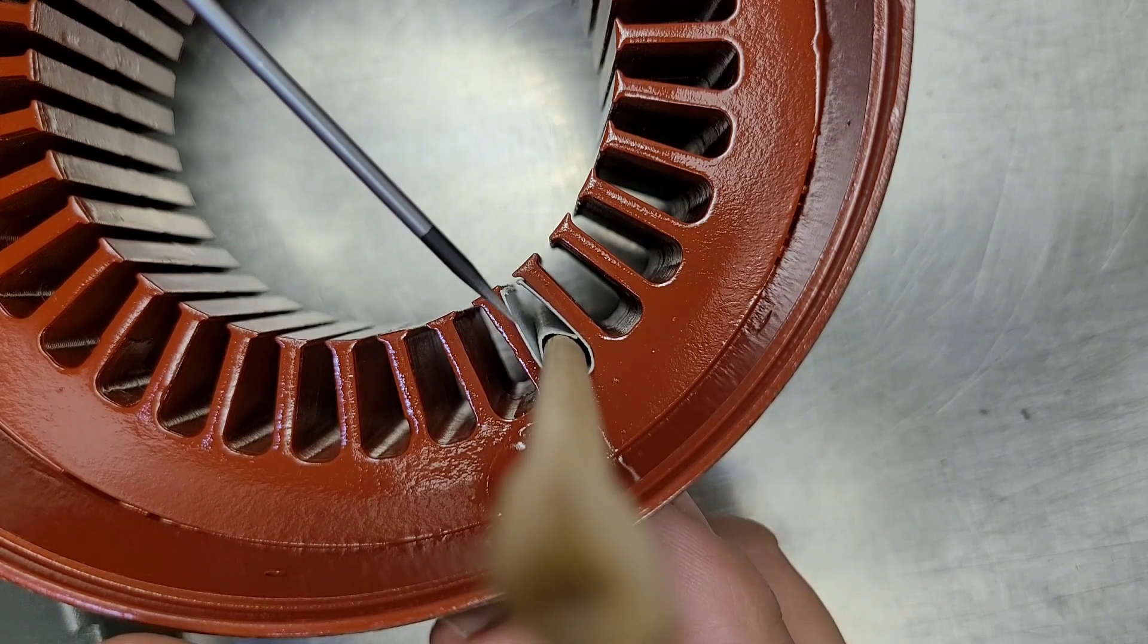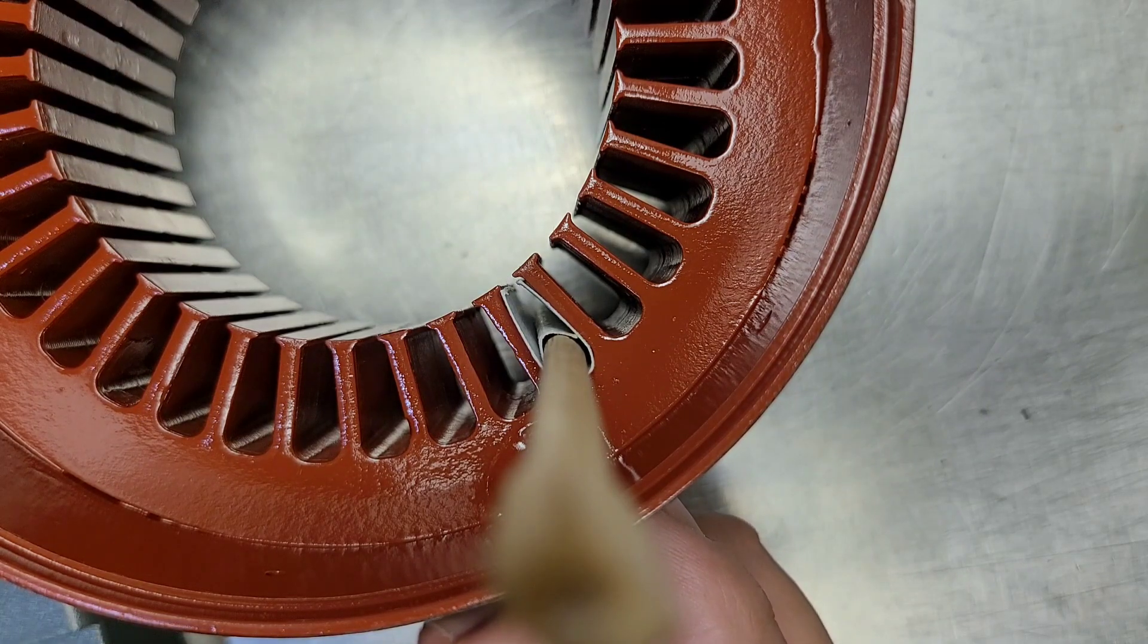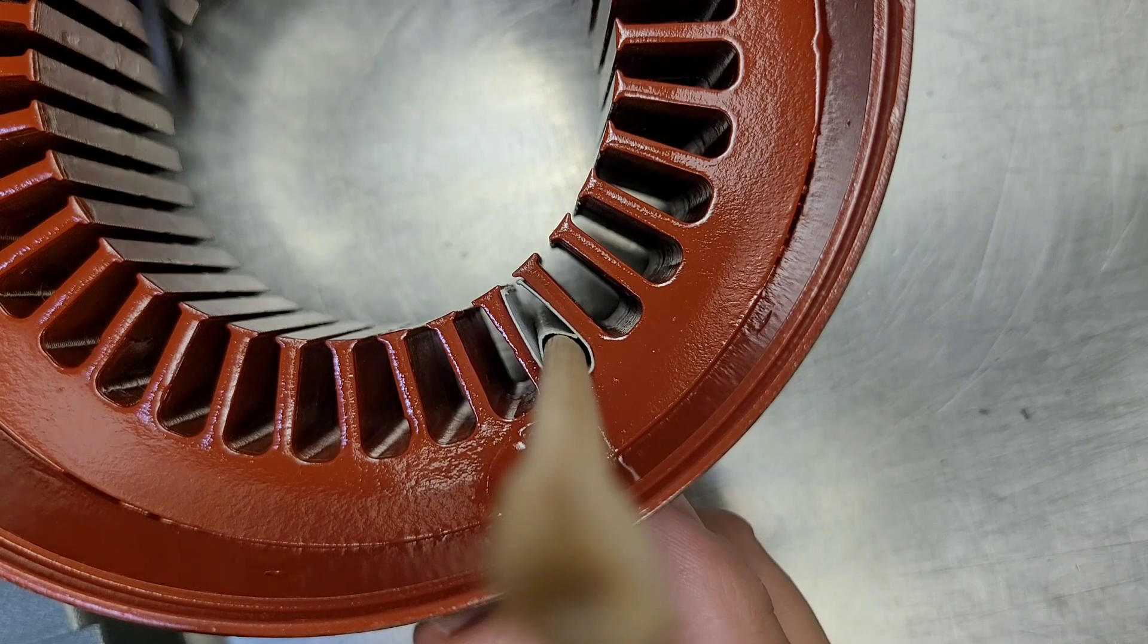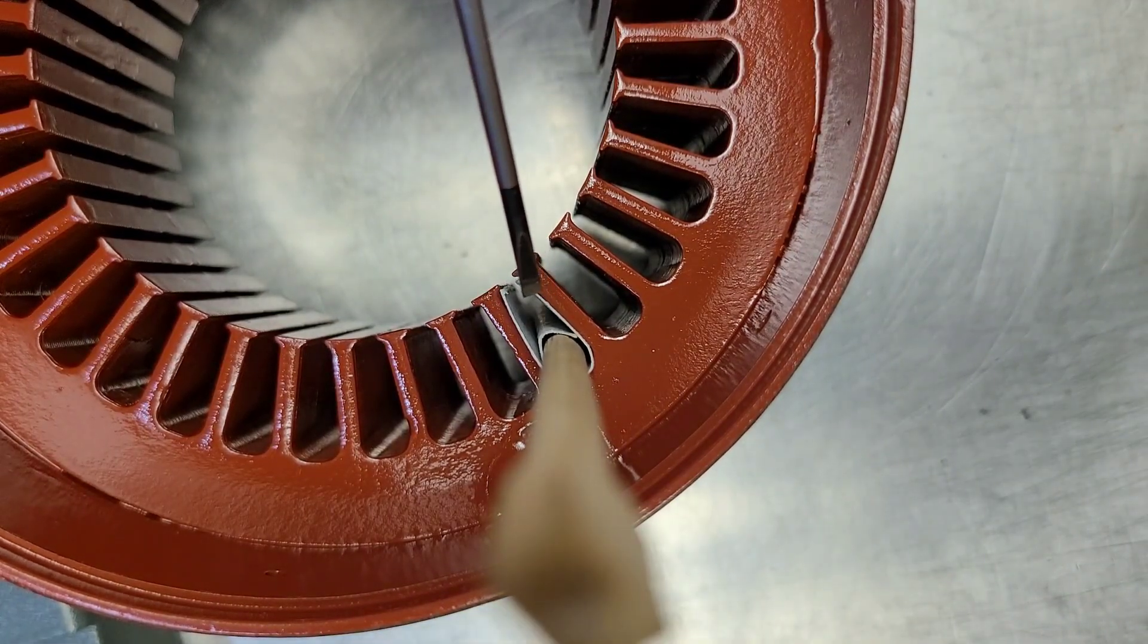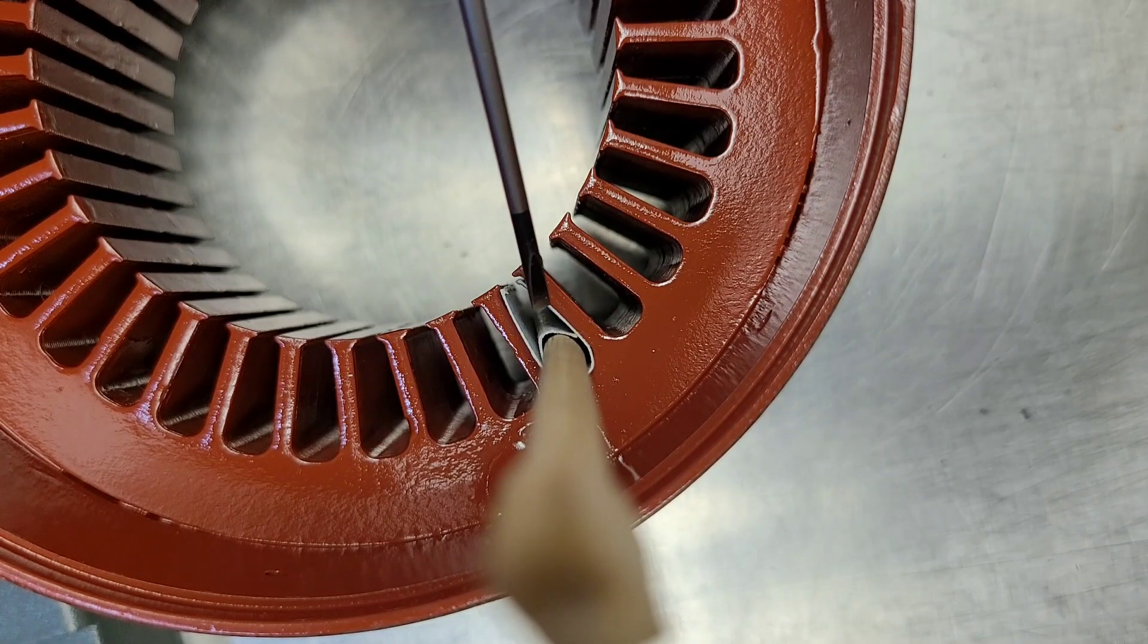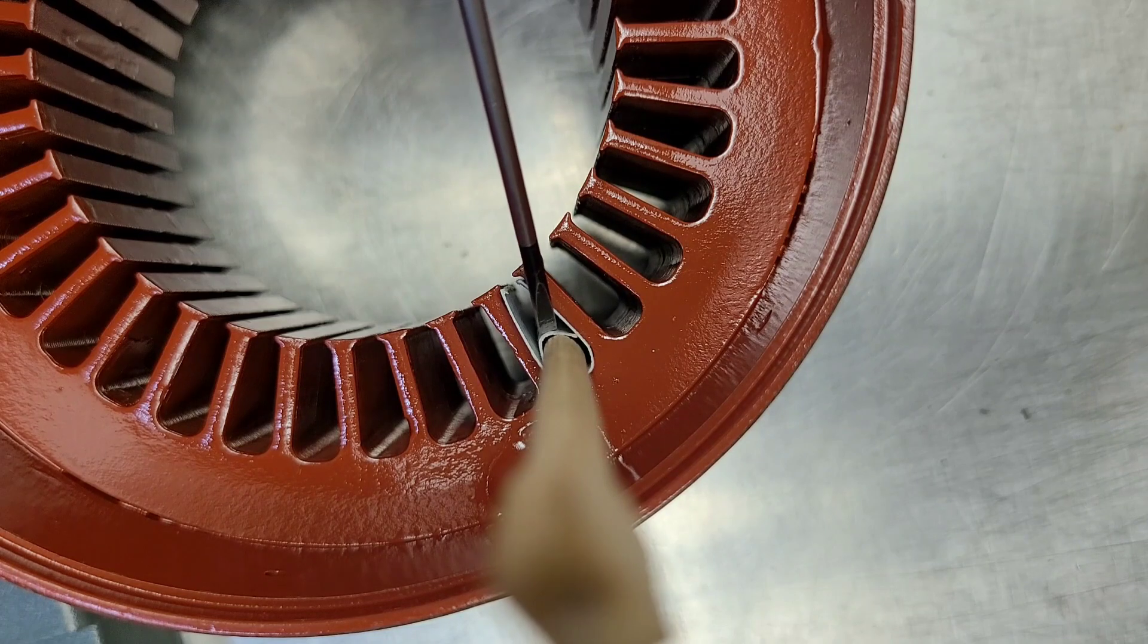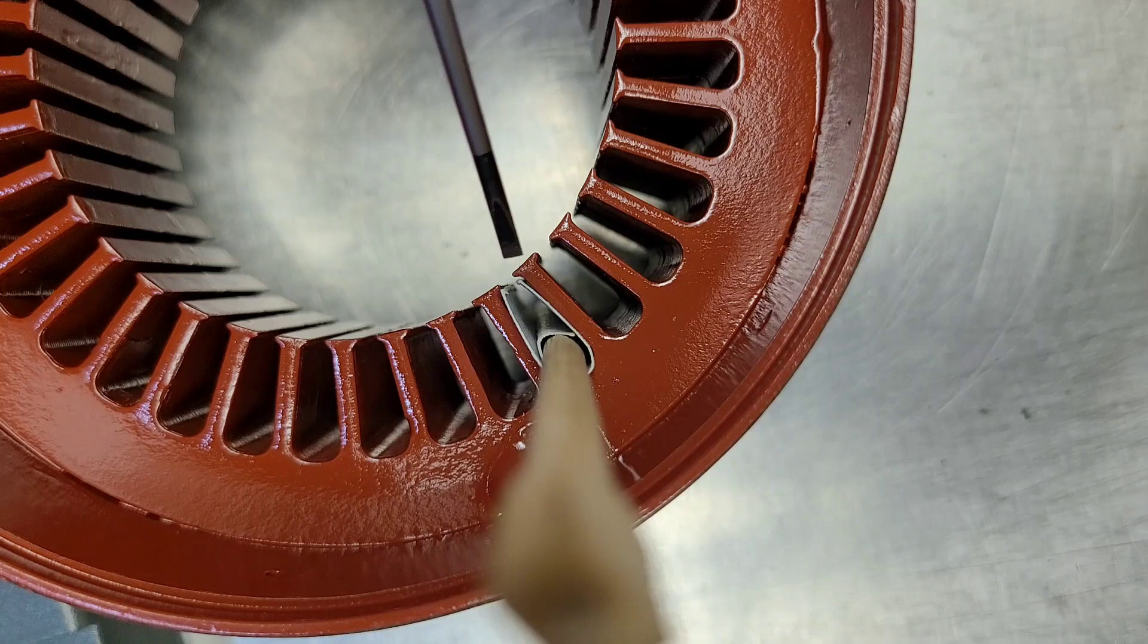And once everything gets varnished together it'll all be nice and solid. And also if you've got two different windings, let's say there are some portions of this motor where you've got the run winding on the outside and you've got the start winding on the inside.